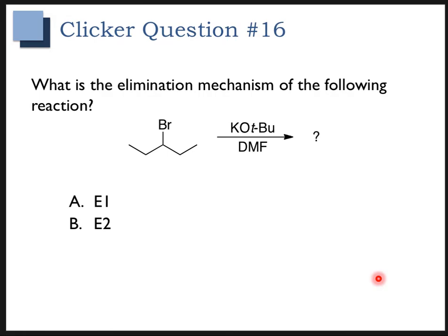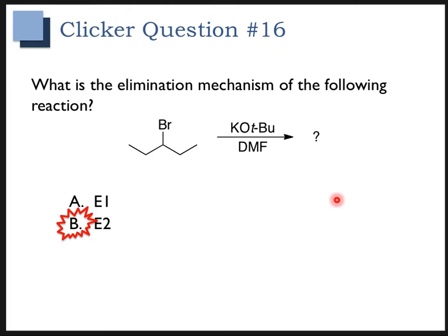Let's go through some iClicker questions so you can practice. Go ahead and pause your video and see if you can identify the mechanism of this reaction. Hopefully you were able to correctly identify that this is an E2 elimination reaction because we have a strong base — potassium t-butoxide, with a negative charge on the oxygen. This is a localized charge, making it a strong base. DMF is a polar aprotic solvent.